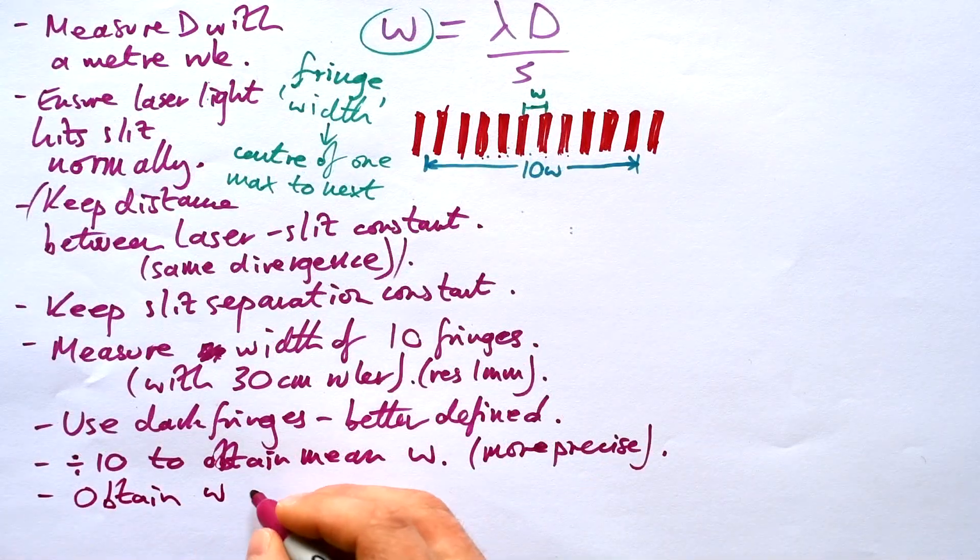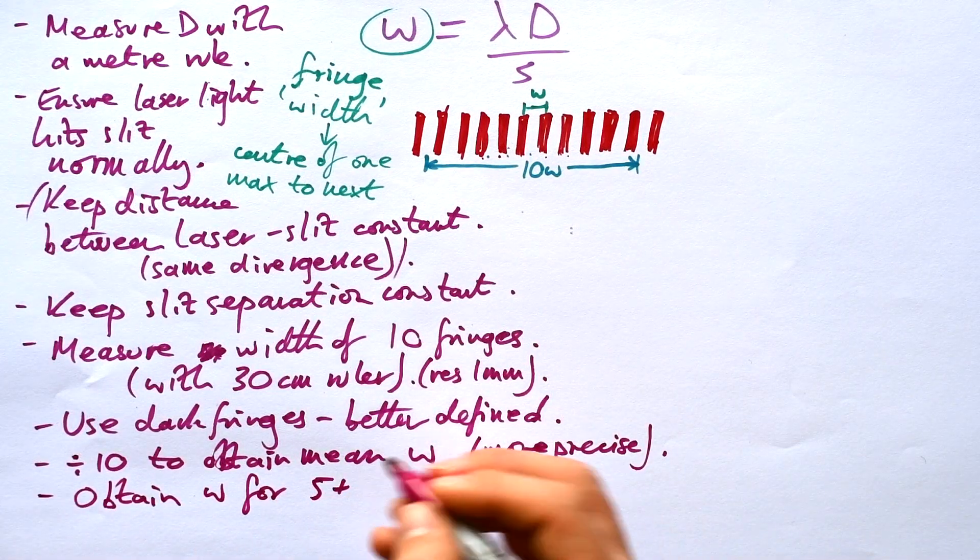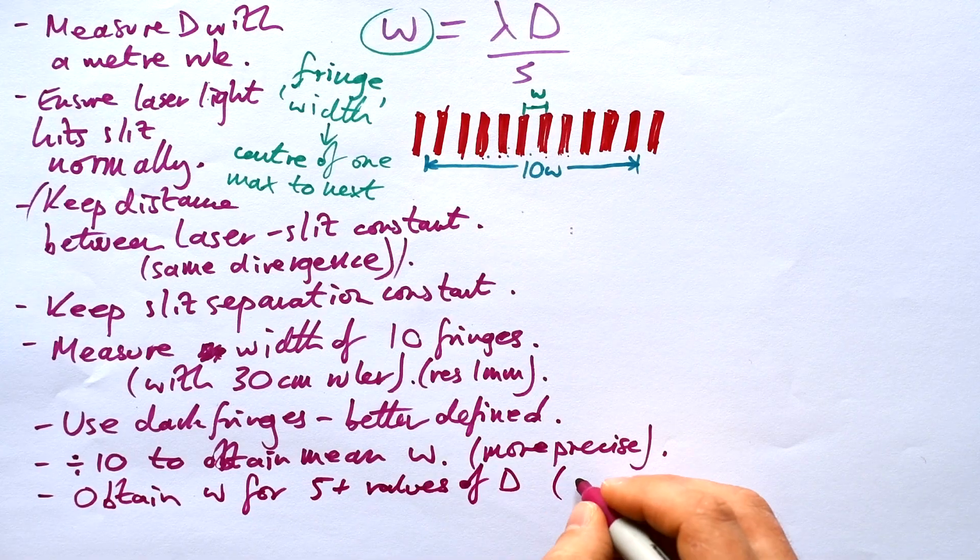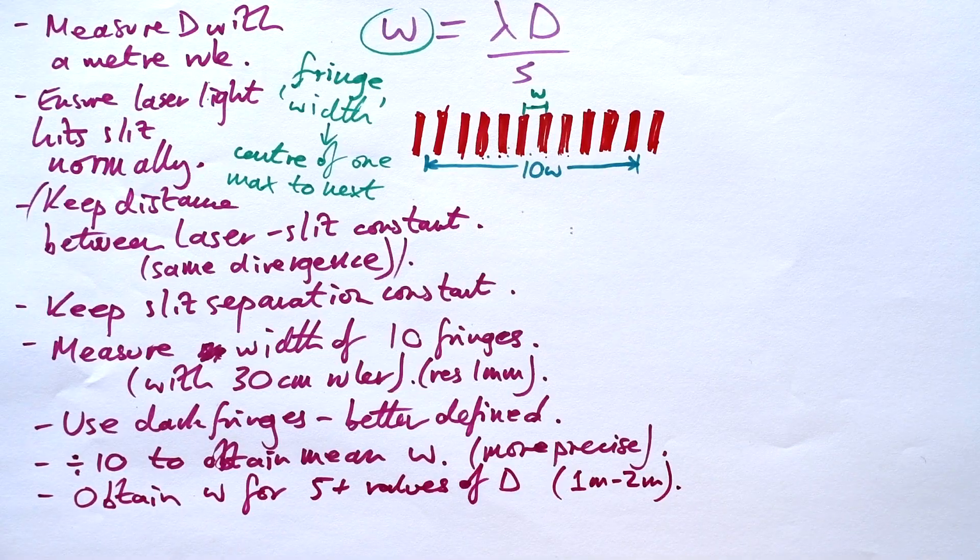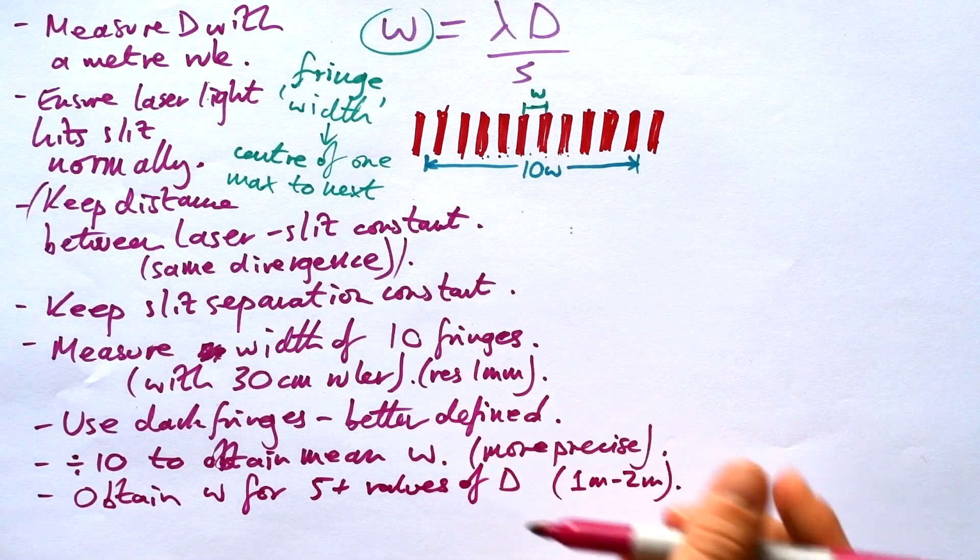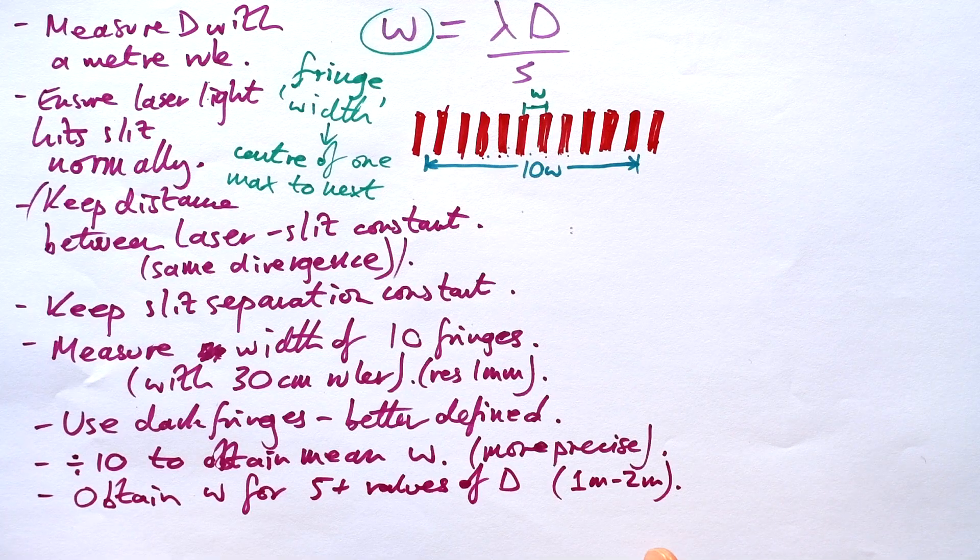So we're going to obtain W for five or so readings maybe more. And let's say that we go from one meter to two meters. We're not going to go below one meter because fringes will be too close together. It's going to be very imprecise. Our uncertainty is going to be massive.